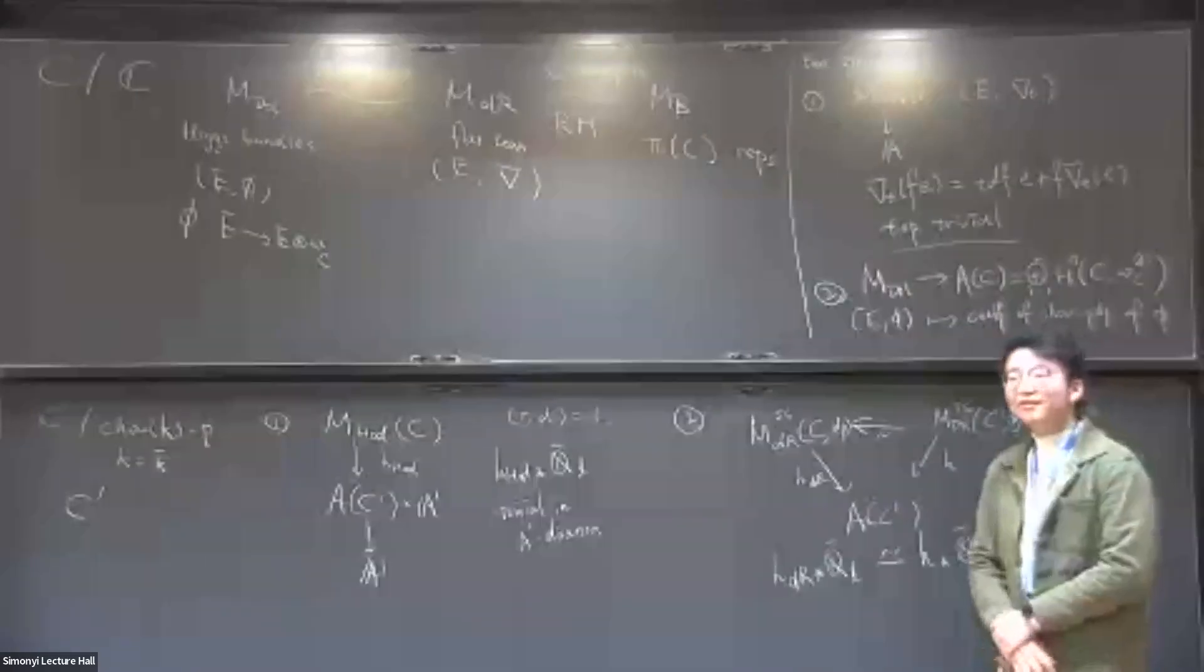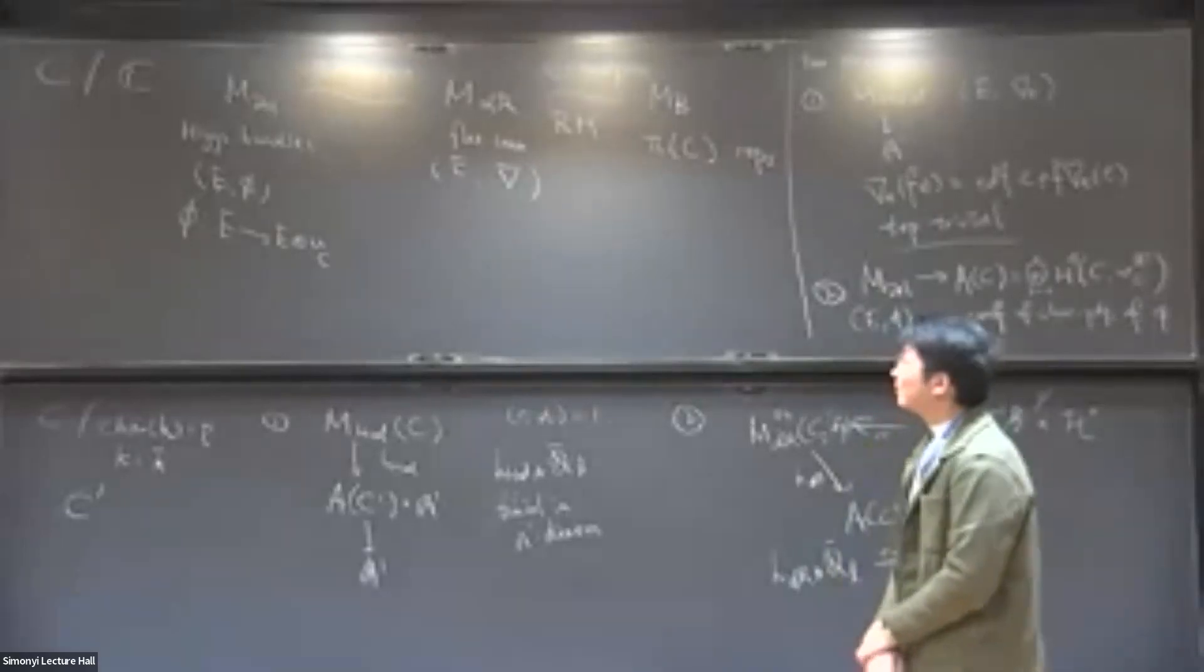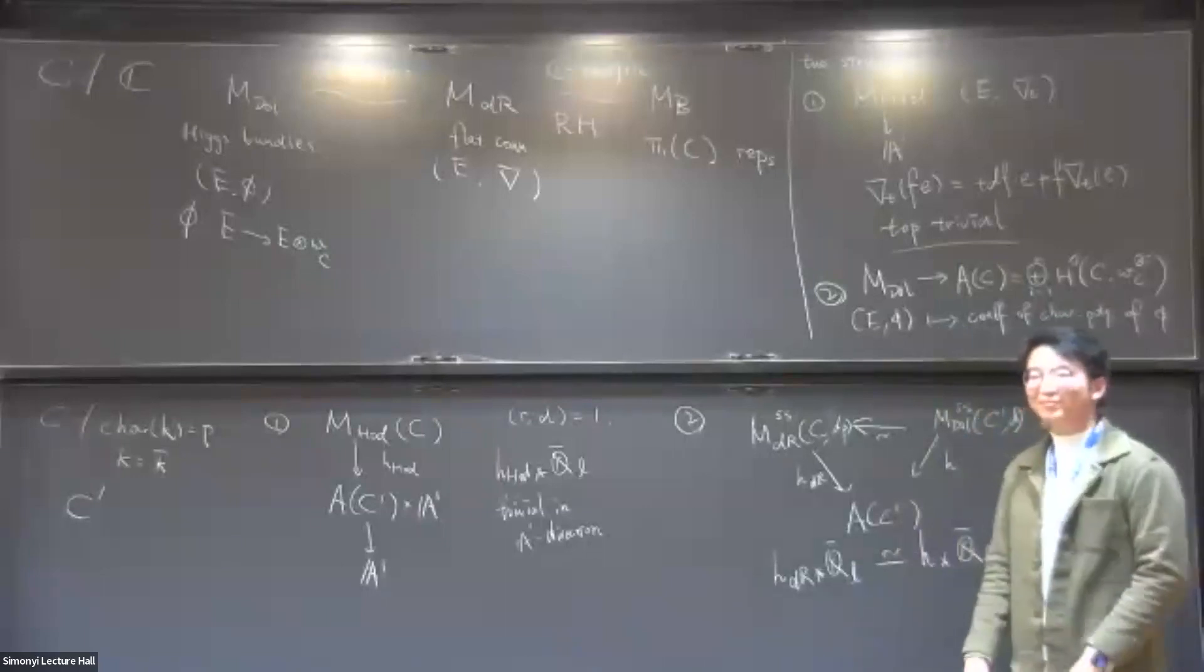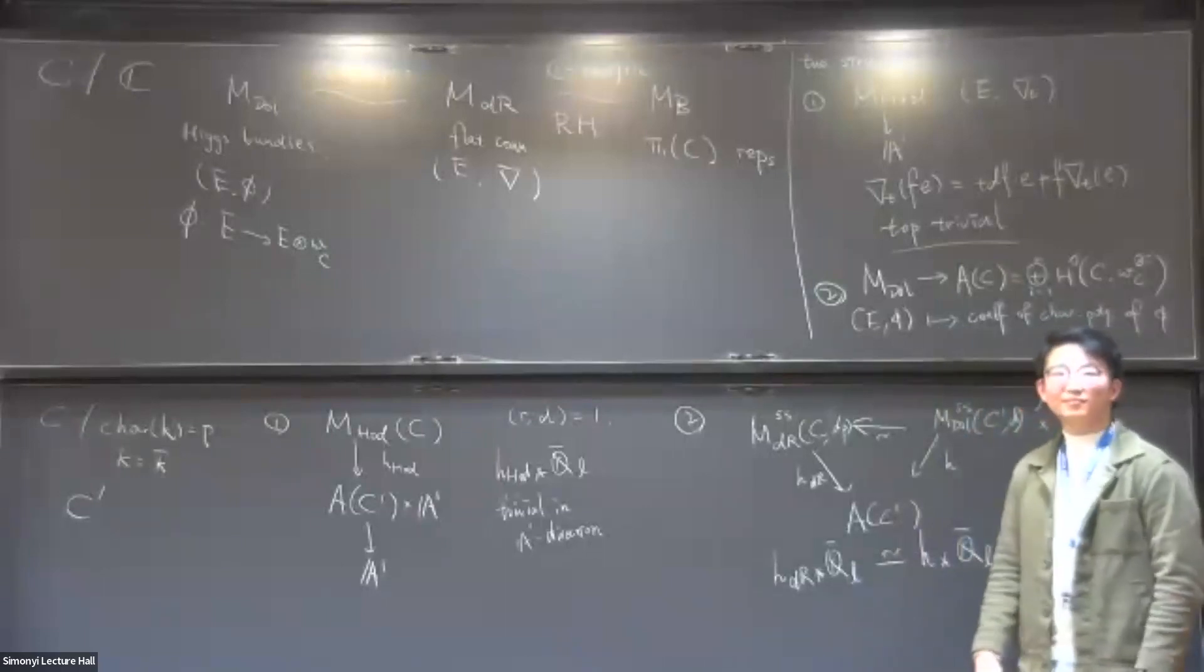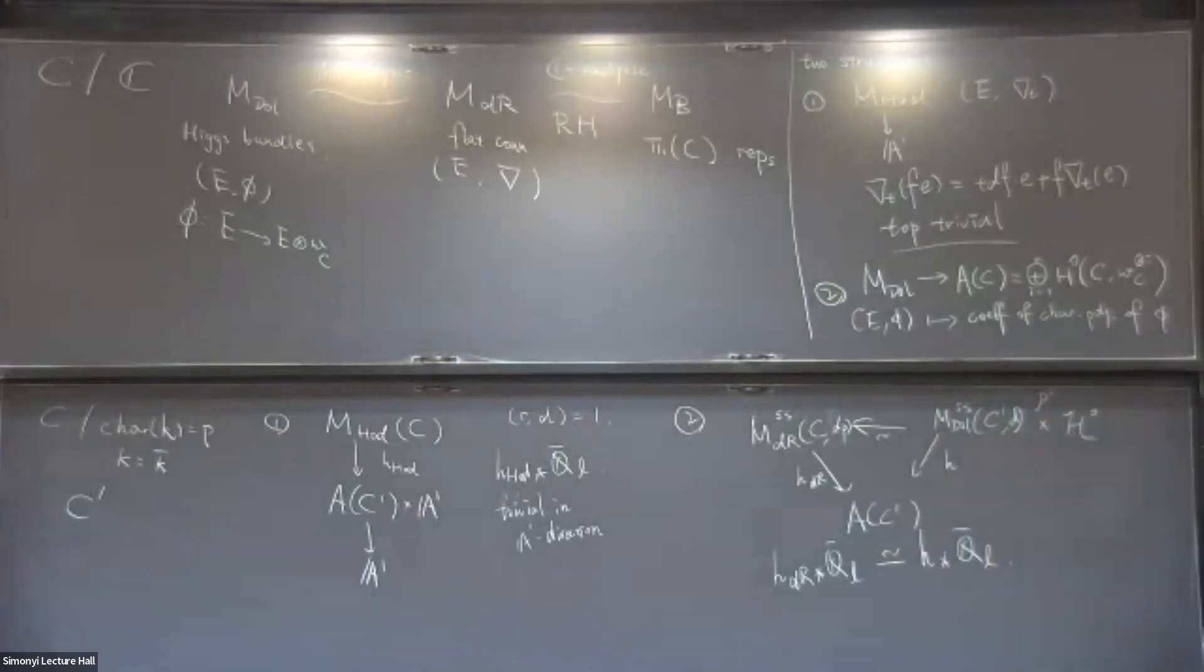Is it possible to also build some sort of interpolating space that also takes you over to the Betti side? Not that I'm aware of. So this Hodge moduli stack is interpolation. It's a family that one end you get to the Dolbeault and the other end you're going to de Rham, right? Right, yeah.